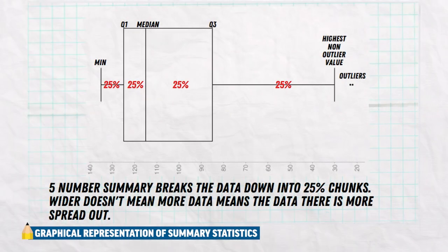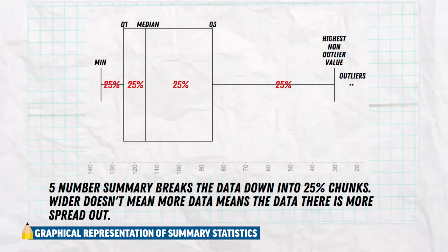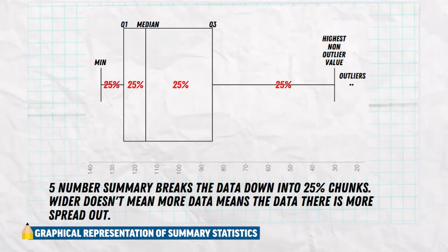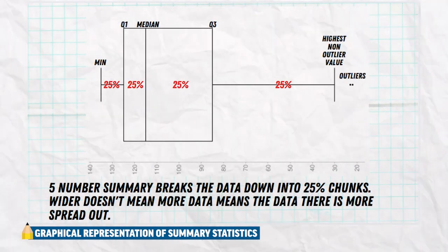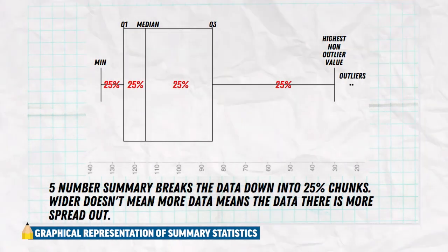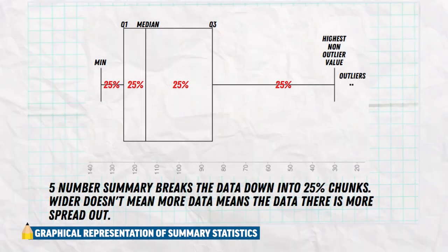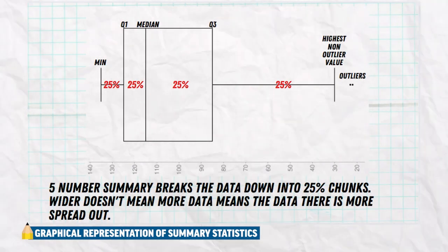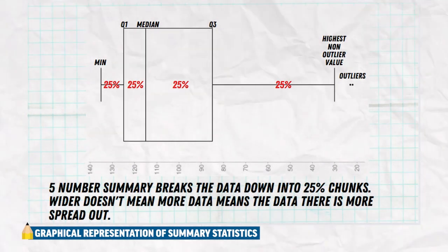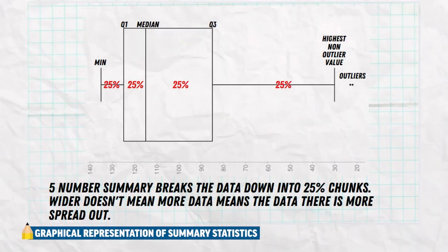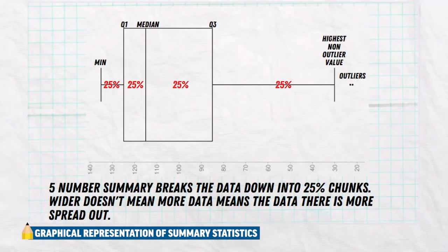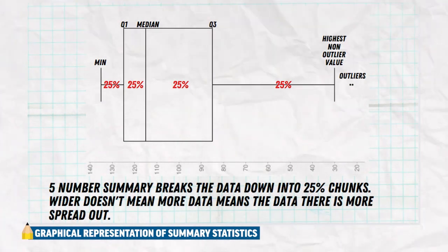Each chunk — below Q1, in between Q1 and the median, in between the median and Q3, and from Q3 all the way to that outlier — represents 25% of data. Wider simply means more spread out. It doesn't mean more data.